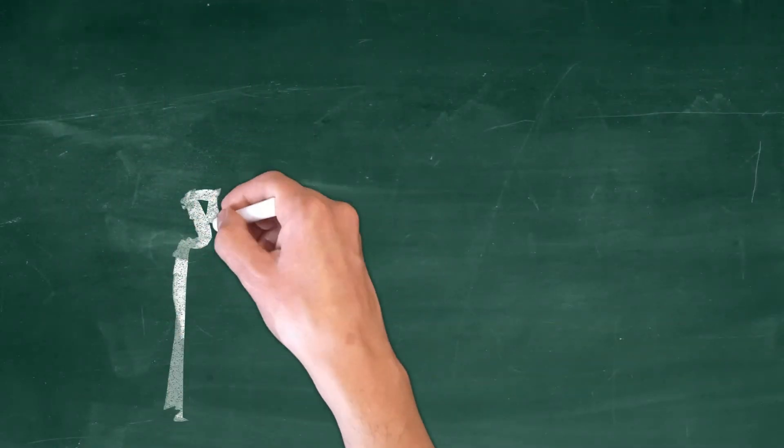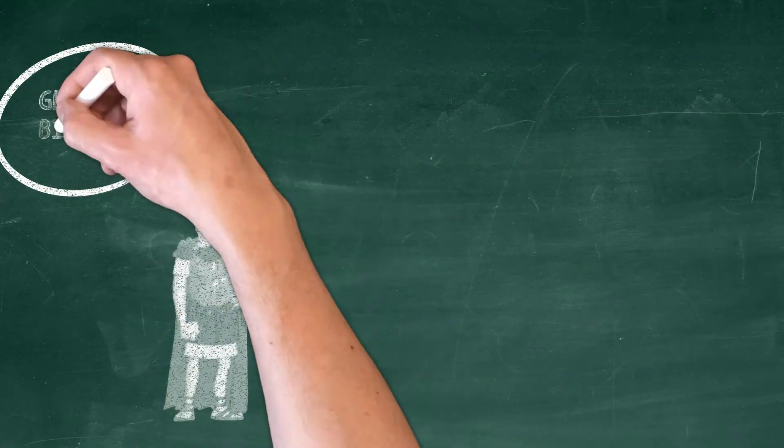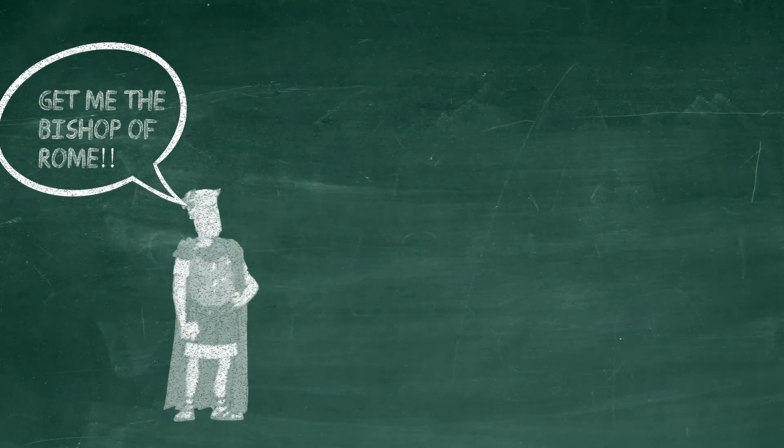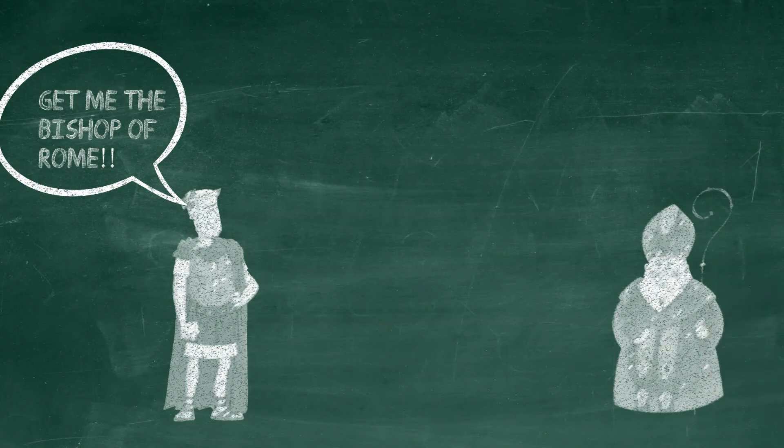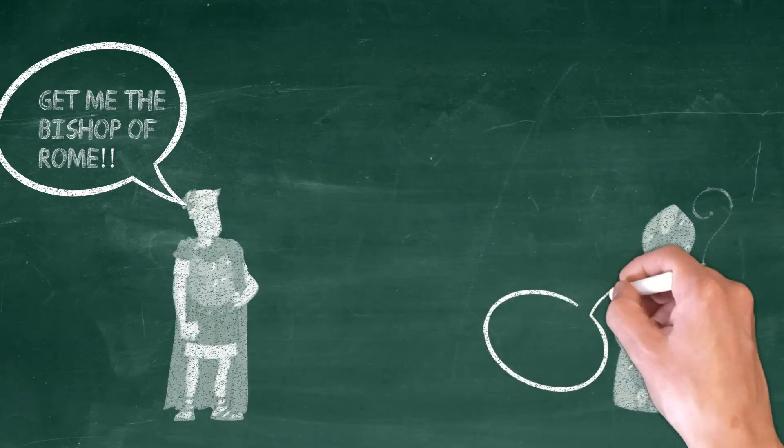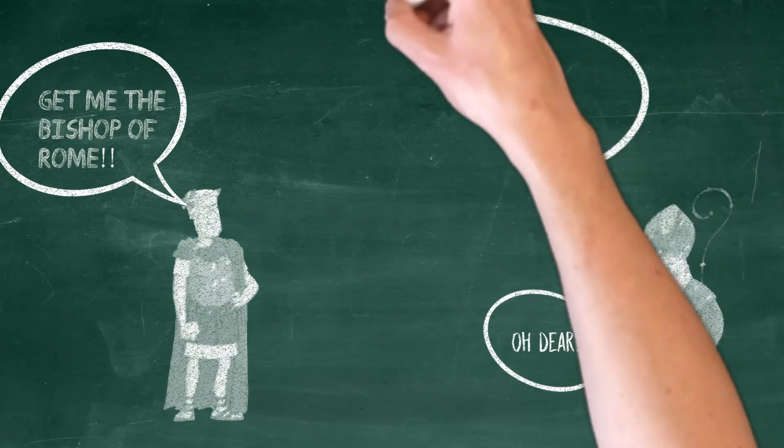And when Constantine marched into the city of Rome to make a victory lap, he summoned the bishop, or you might say the pastor of Rome, to meet with him. Now, up until that time, every single bishop of Rome had been martyred, that is, put to death for their faith, or died in exile. So you can imagine that when the bishop of Rome got this message, he was assuming that this was going to be the last day he would see.